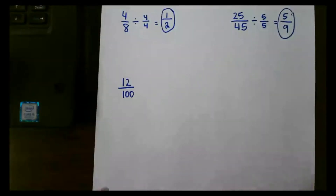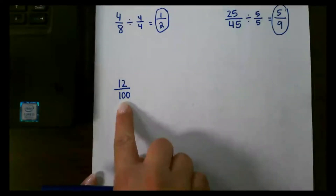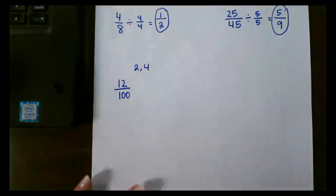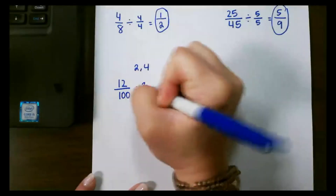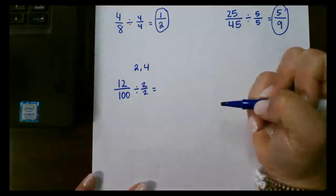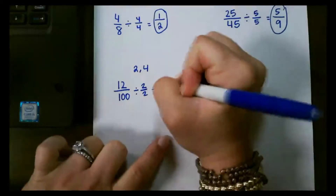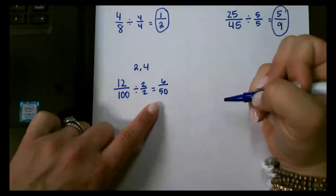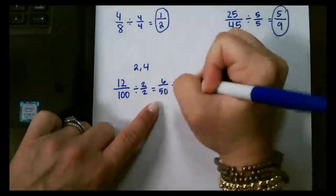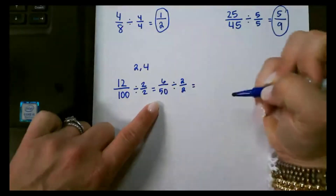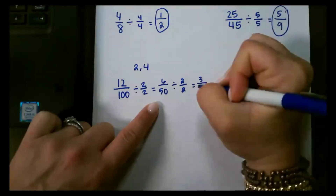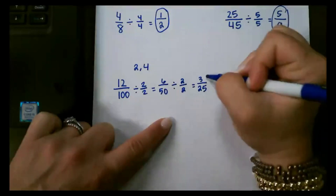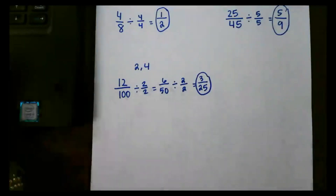Let's look at one more example. Something that will go into both 12 and 100 — I could use 2 or I could use 4. I'm going to use 2 to show you what it looks like when we have to do it more than one time. So 12 divided by 2 is 6, and 100 divided by 2 is 50. These are both even, so I can still divide them both by 2. 6 divided by 2 is 3, and 50 divided by 2 is 25. There is nothing that will go into both 3 and 25, so that would be my final fraction.